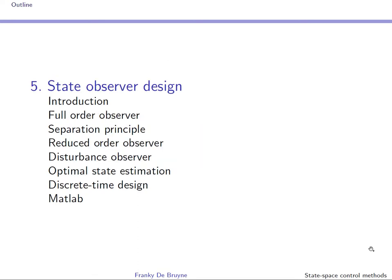Section 5 covers state observation. When designing a state space controller, we make the assumption that all states are available for measurement. If this is not the case, we need a state observer. If all states are observed — another word for estimated — we speak of a full order observer. If only the states that are not available for measurement are estimated, we speak of a reduced order observer. As for state feedback, we consider state estimation based on pole placement and optimal design. We are also interested in implementing the observer in discrete time, as will be the case on the real-time processor.